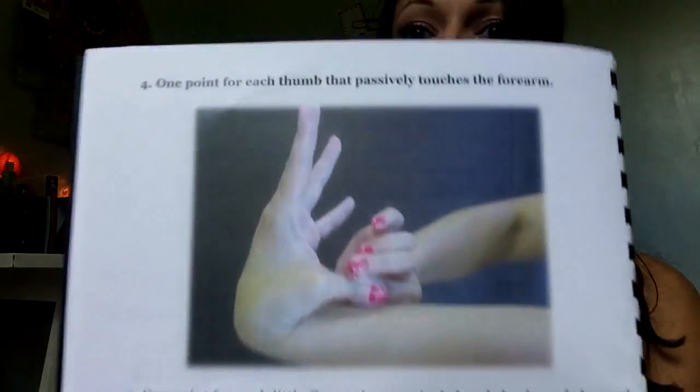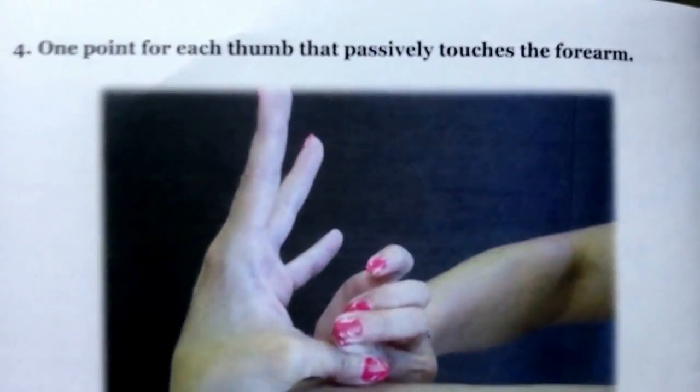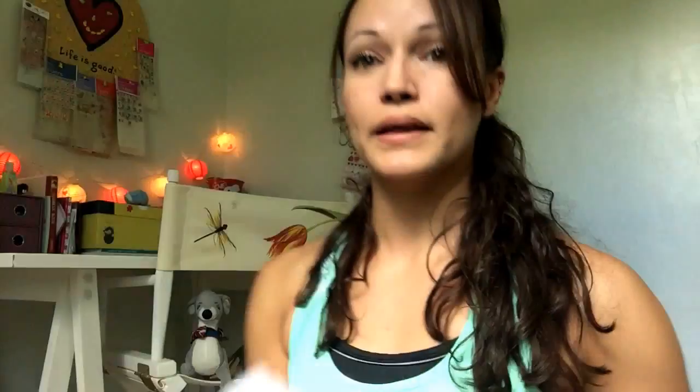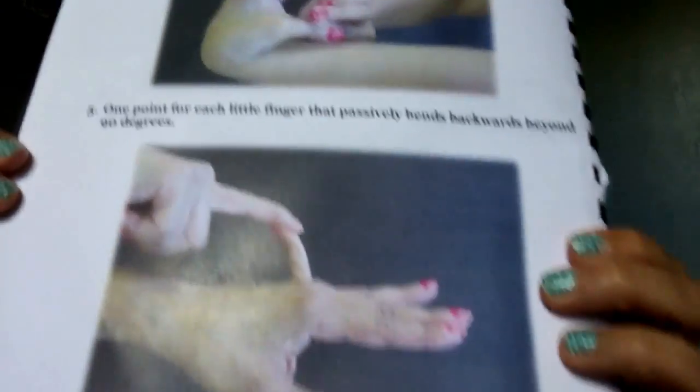Now we'll get into the Beighton Score details. For the thumbs, you're looking to see if the thumb can move back to touch the forearm with ease. When you ask the person to bring their thumb back to touch the forearm, if it just touches the forearm without effort, that's a point. There are two points available here — one for each side. I don't get a point here as mine doesn't reach.